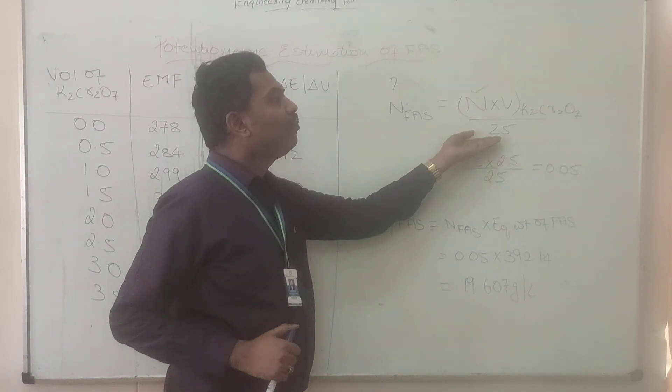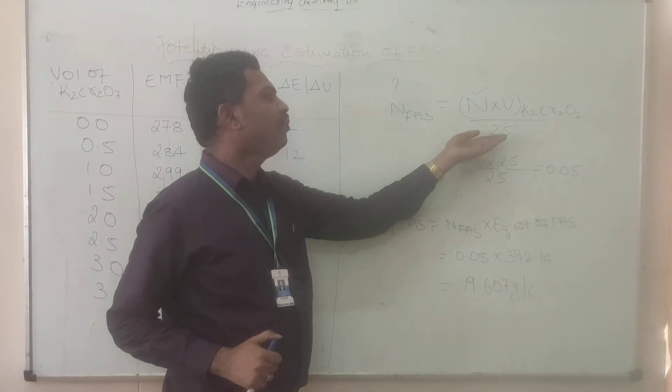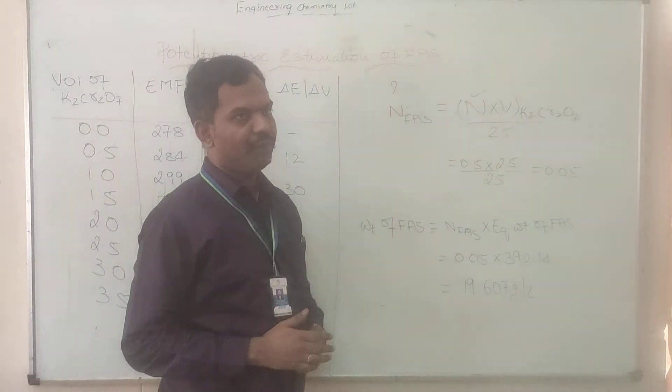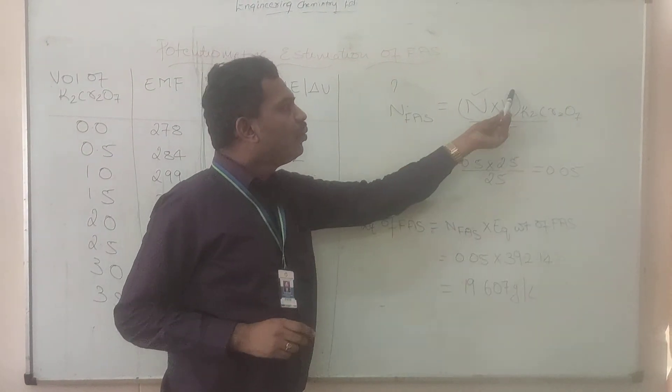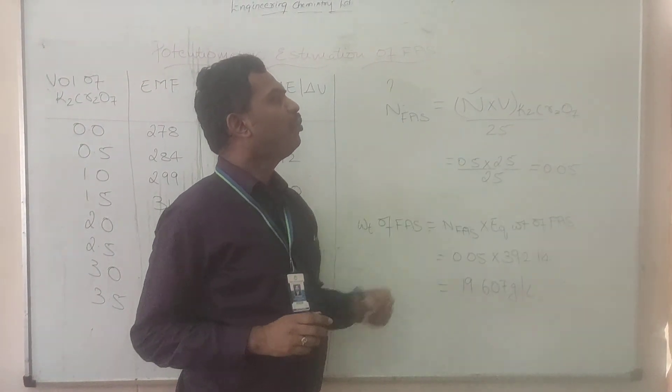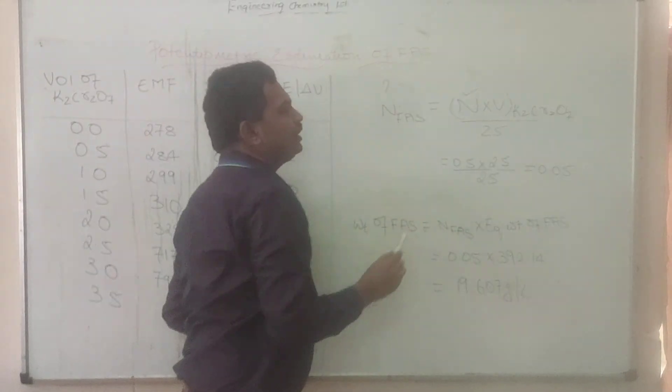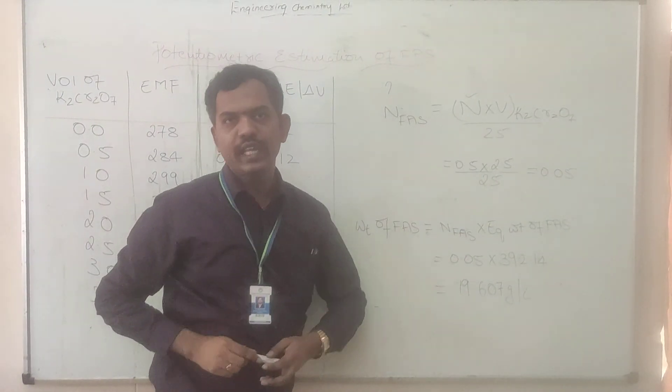So, similarly, the volume may vary in your examination. We might give you 20 ml, we might give you 32 ml, we might give you 30 ml. But, the volume of K₂Cr₂O₇ or the equivalence point will vary. But, for calculation, we will take this as fixed 25 ml. That's it. Thank you.